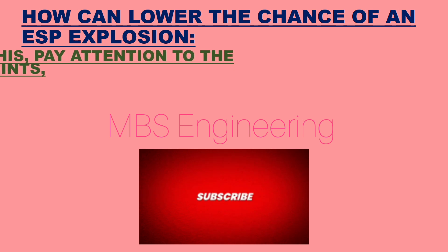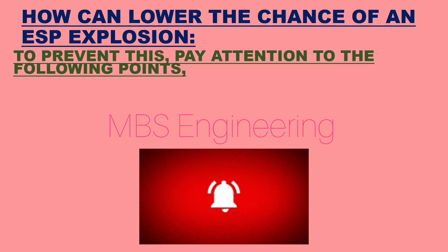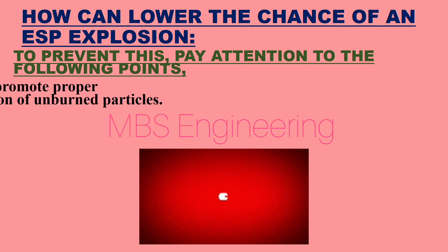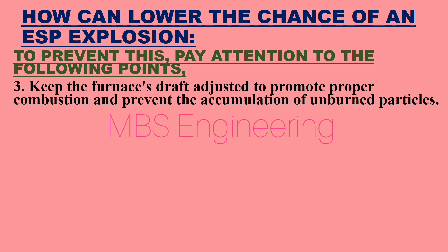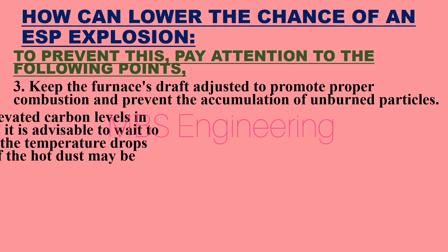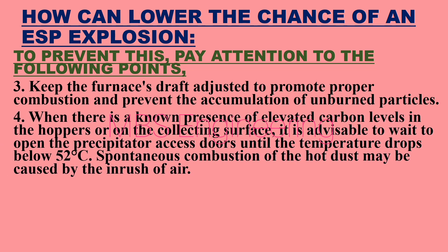Point 3: Keep the furnace draft adjusted to promote proper combustion and prevent the accumulation of unburned particles. Point 4: When there is a known presence of elevated carbon levels in the hoppers or on the collecting surface, it is advisable to wait to open the precipitator access doors until the temperature drops below 52°C. Spontaneous combustion of the hot dust may be caused by the inrush of air.